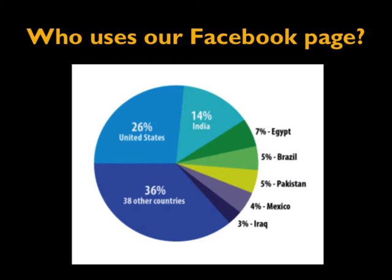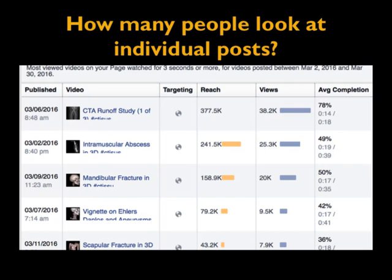People give talks at meetings about how they have a website that gets a hundred people, or they give a lecture that ten people from Africa listen to — oh, incredible. We have a million people listening in. And if you look at that chart — 26% US, India, 36% other countries, Egypt, Brazil — we are really helping a lot of people around the world. For individual posts, the best from a month period: a CTA runoff study in 3D reached 377,000 people. The numbers are incredible.